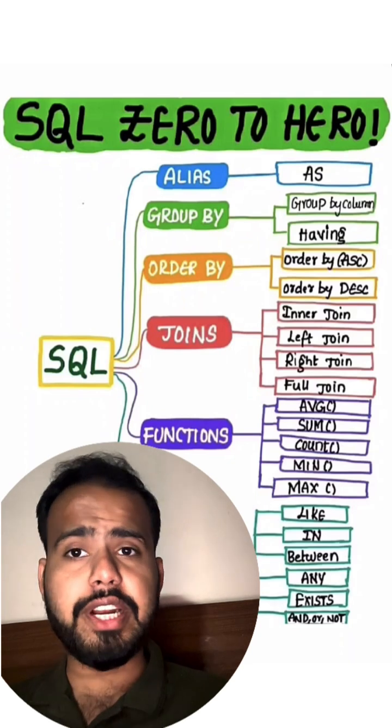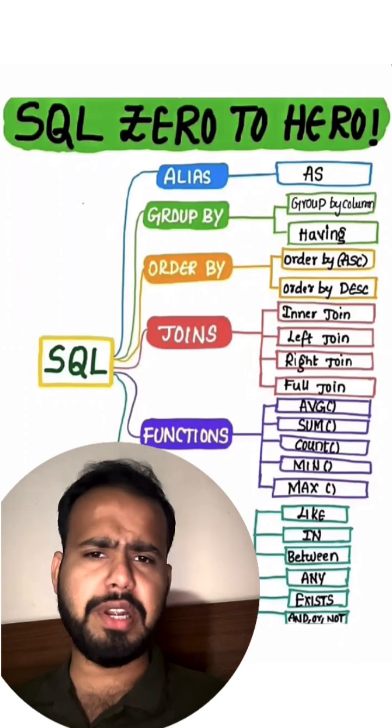Then we have joins: full inner join, left join, right join, full - there are multiple types of joins we have.